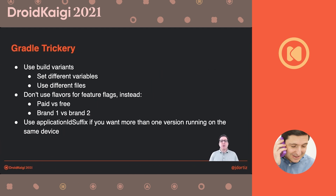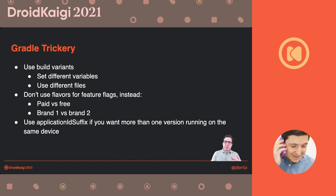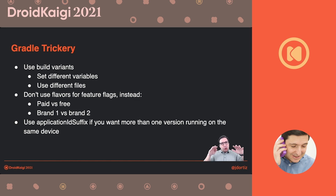We will be using Gradle and build variants, defining a different variant for each of the different stages we want in our code. We will put a different file with the feature flags in each of these build variants. Please don't use flavors because they are meant for another purpose — like paid versus free, or multi-brand applications. The best idea is to use build variants instead of flavors. You can also use the application suffix if you want to have the same application in two different stages running on the same device, but keep in mind that you will have to think about data transition between versions.